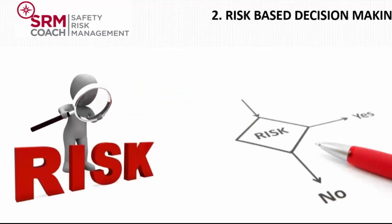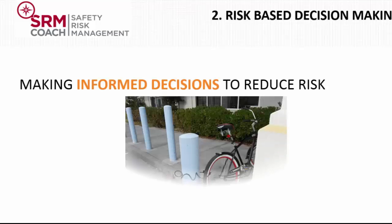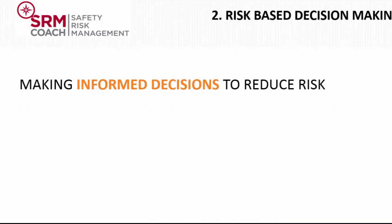Why is risk-based decision making so important? If we did not base our safety-relevant decisions on risk, the problem might be that our limited protection resources are allocated to the wrong problem. As a result, the likelihood of having an accident is not reduced. This can create a false sense of security. We might think we are safe because we do many actions, but if we don't have an accurate view of risk, we have no idea if they are actually working. Through the SMS operation, our management team can make confident and informed decisions to reduce risk.